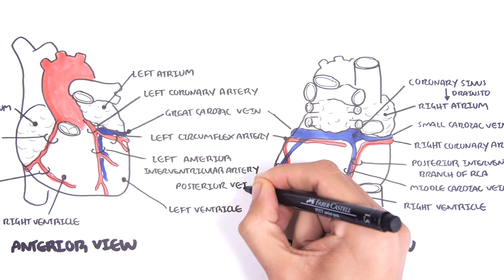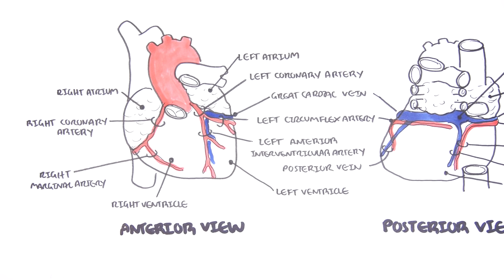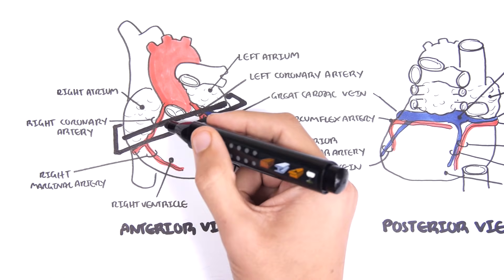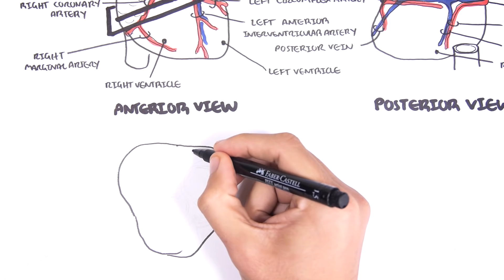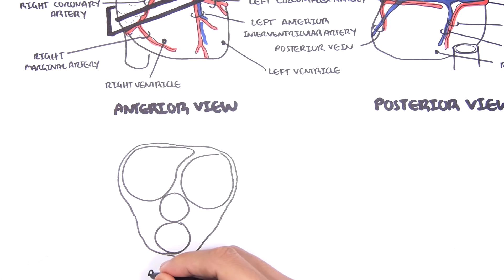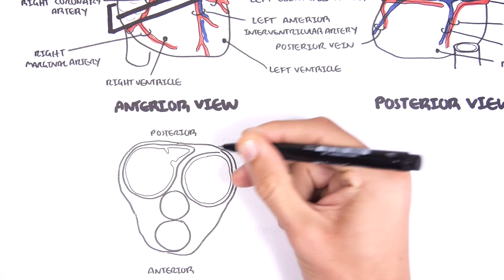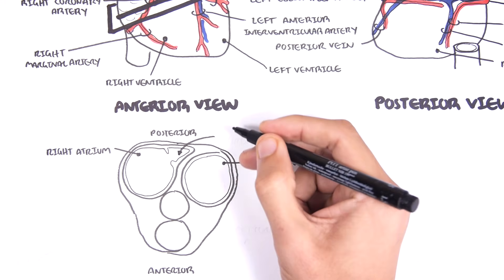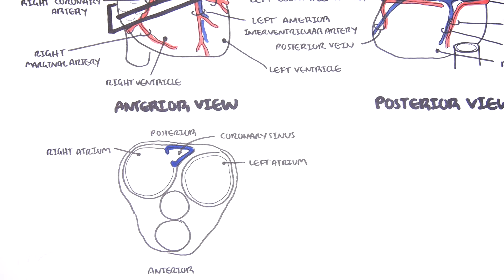That was the anterior view and the posterior view of the coronary vessels. Let us now cut a cross section of the heart and look at where the coronary arteries come off the aorta and also where the coronary sinus drains into the right atrium. So here we have a cross section. Here is the anterior — the front part of the heart — and the posterior, the back. Here you have your right atrium and your left atrium. Here is the coronary sinus where the veins drain into, and it will drain into the right atrium.